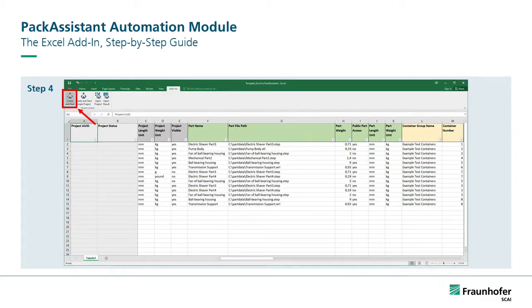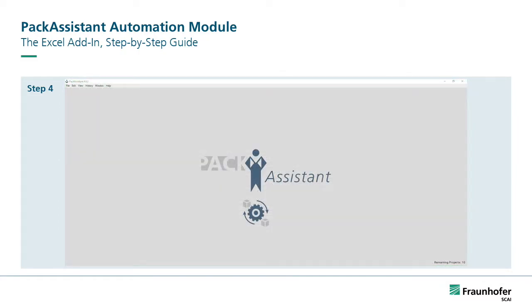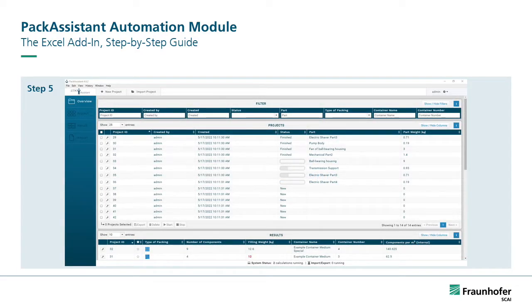Step 4: Click the button labeled Create and Start from the Add-ins menu to send all the projects in the spreadsheet to Pack Assistant for creation and optimization. Pack Assistant will automatically run an optimization for all projects which have all required settings. After clicking the button Create and Start and confirming the prompt, Excel will open Pack Assistant and redirect the user to a loading screen where the user can see how many projects are queued up for creation in Pack Assistant. Step 5: When Pack Assistant has finished creating all projects, the user will be redirected to the overview page where he can see all created projects.